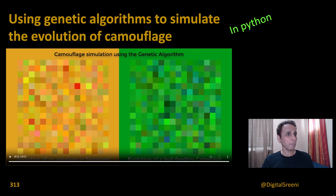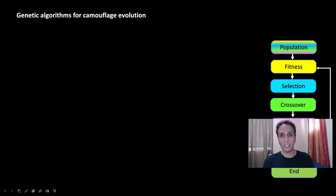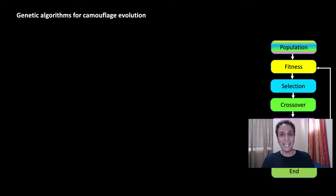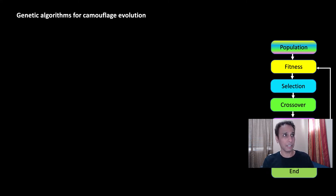Okay, now let's go ahead and use the genetic algorithm for this camouflage simulation. In the last video I mentioned how you have a population, a fitness function, and you perform selection based on fitness — maybe the top two individuals — then crossover, mutation, and so on. If not, go ahead and watch that video because it lays the foundation for all future videos on this topic.